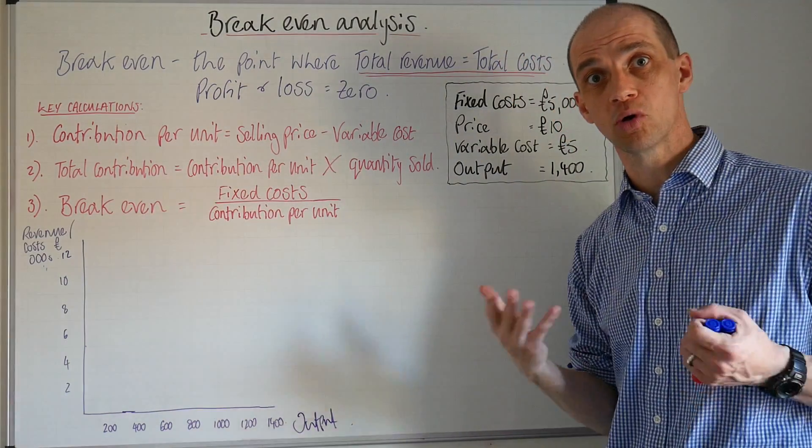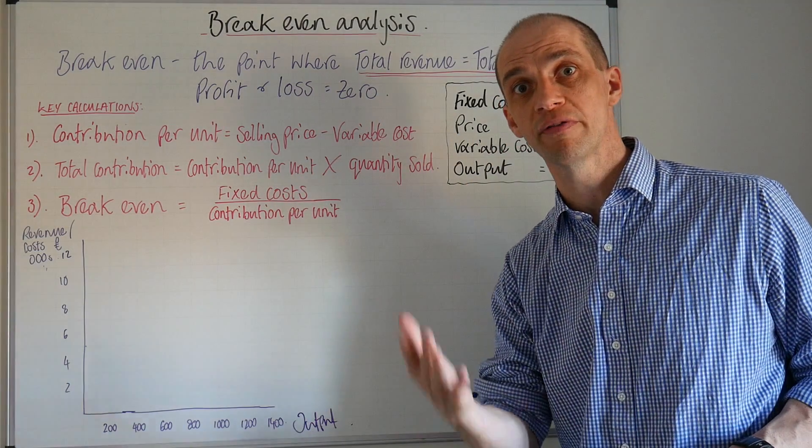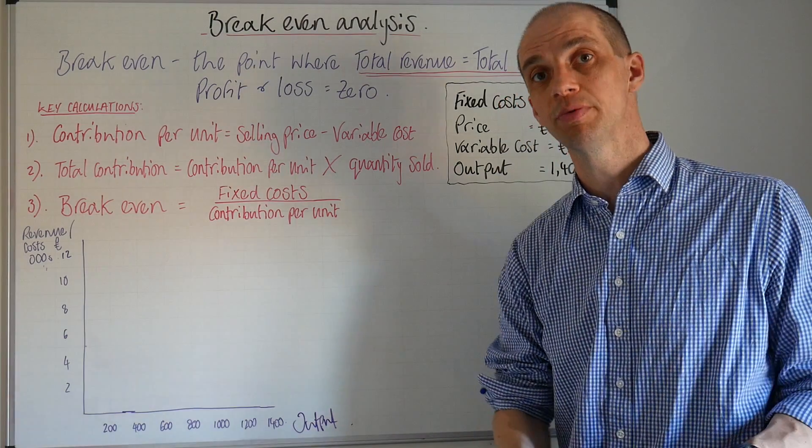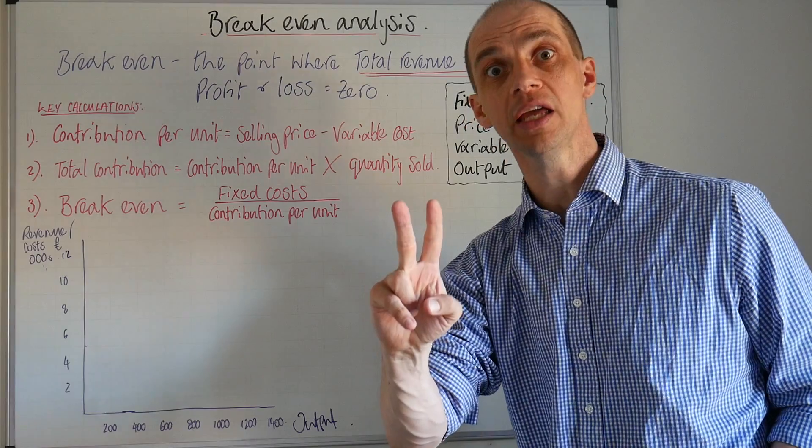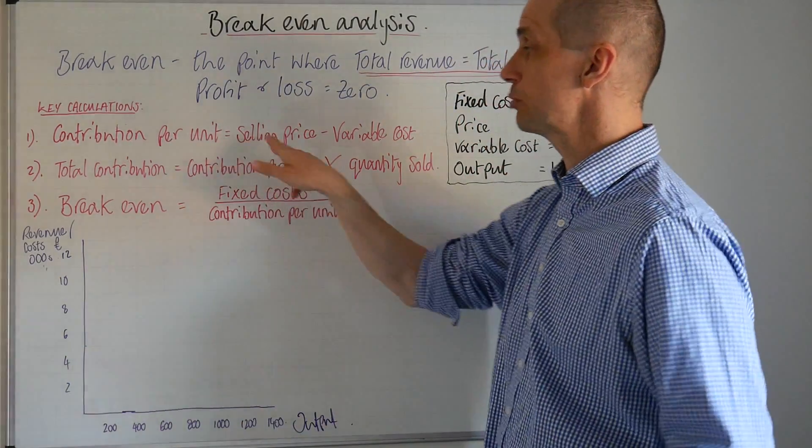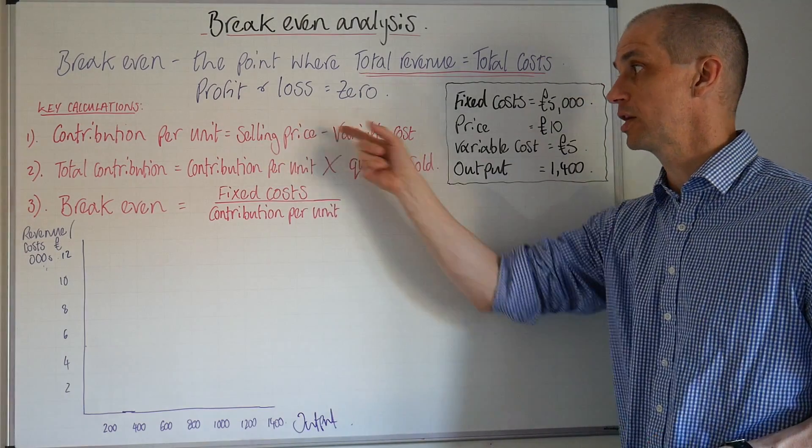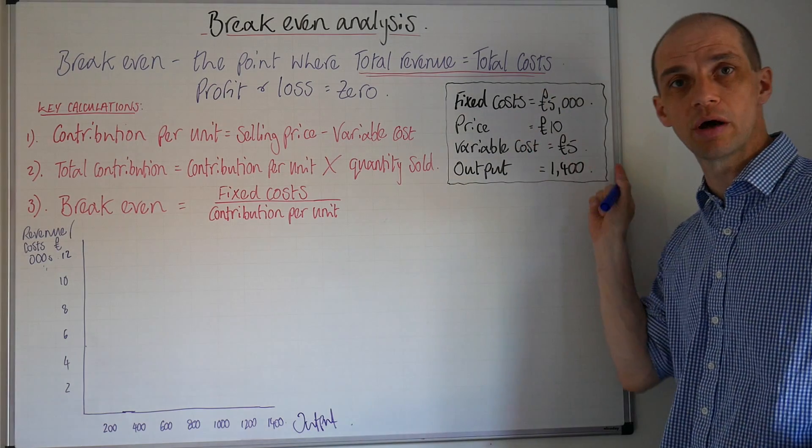Firstly, that is about contribution per unit. When it comes to contribution, contribution provides a business with contributions firstly covering their fixed costs, and secondly to actually giving them some profit. Contribution per unit is simply the selling price minus the variable cost. Let's look at an example of this which I've just drawn up with some figures here on the right hand side.